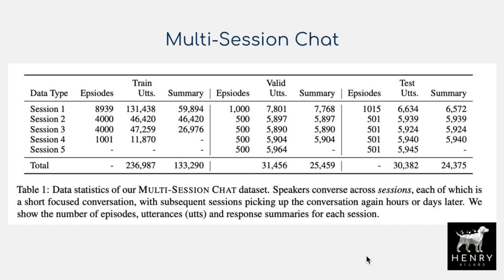With this data collection procedure, they end up with the Multi-Session Chat dataset. An utterance refers to one line of text sent to the other agent in a text message chat interface. In addition to episodes and utterances, there are also summaries — written by a separate crowd worker — that retain all the important information across sessions. These summaries are what's used to train the long-term memory systems, which is the key distinction behind the title Beyond Goldfish Memory.